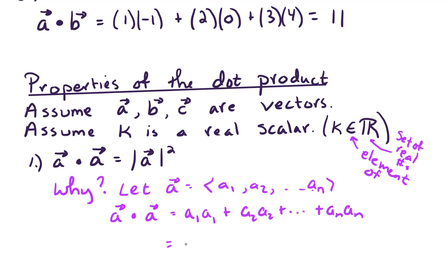In other words, this is just a1 squared plus a2 squared plus a sub n squared. And this looks really familiar.